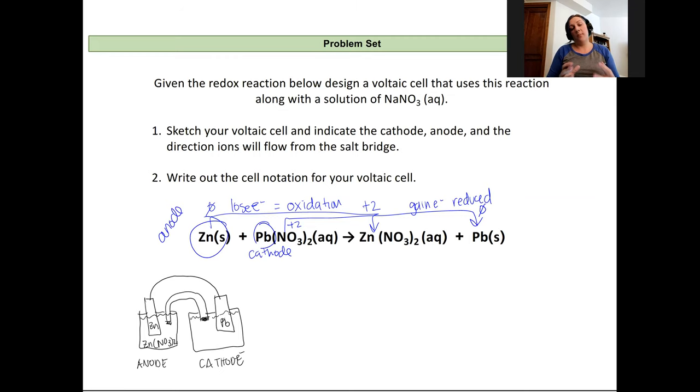And for my cathode where reduction takes place, my electrolyte solution is really my reactant. So that'll be the lead (NO3)2, the lead two plus.